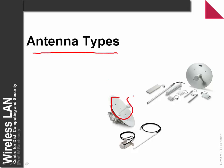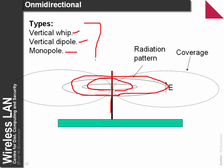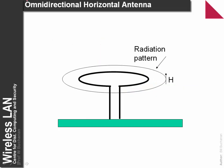Looking at real antenna types: the antenna is normally selected for polarisation and signal strength requirements. One type is omnidirectional, where power is spread around the antenna. We typically see a vertical whip, a vertical dipole, or a monopole type. The coverage is spread around the antenna. We can also have a horizontal omnidirectional antenna, such as what we'd see on a TV antenna.